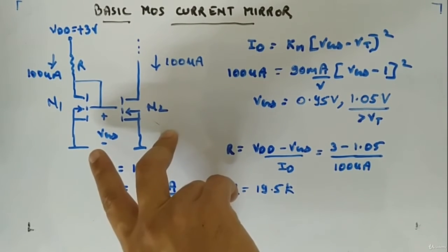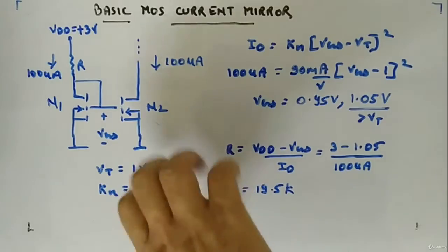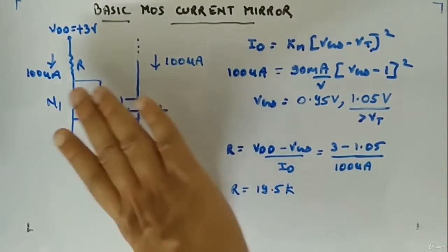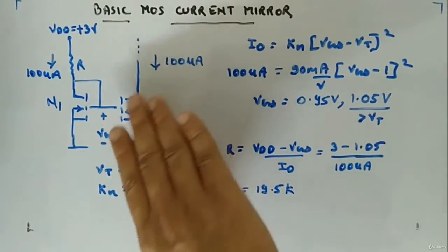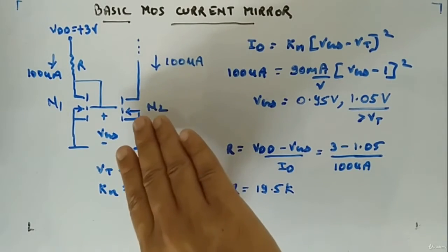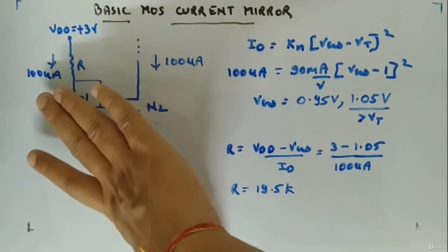It is not necessary that they have to be matched. Even if they are unmatched it will work out. You will just not get exactly similar current in both sides if they are not matched. If they are matched, both the currents will be same.